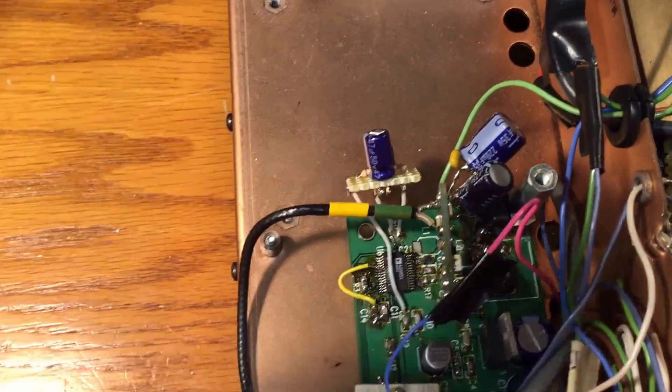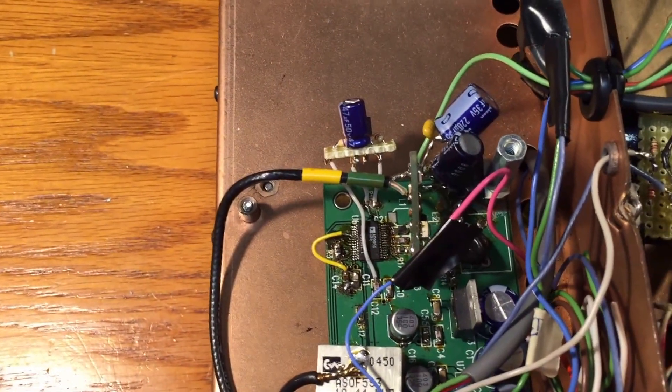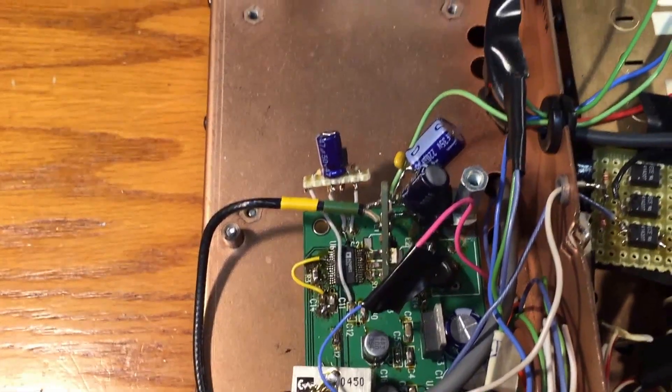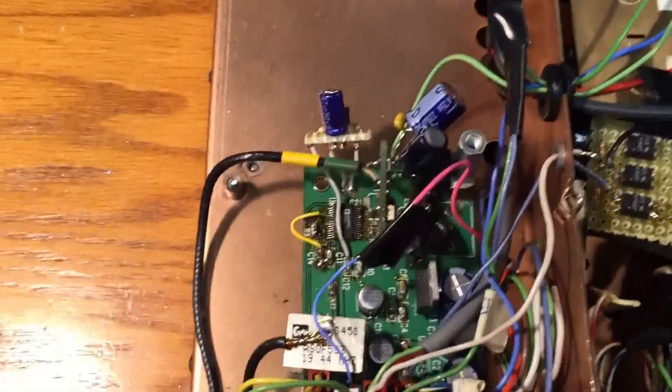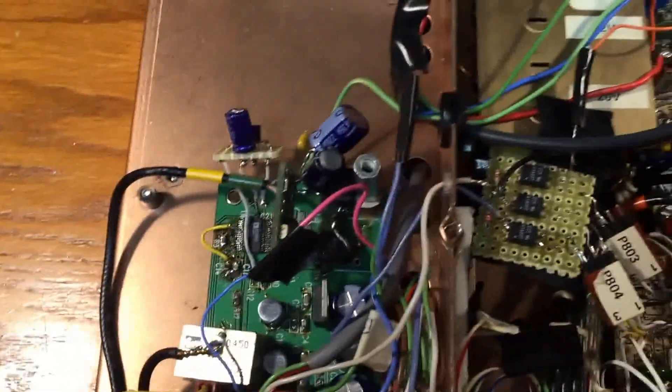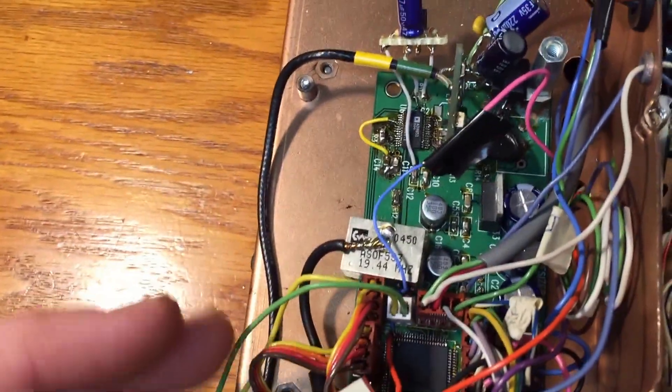This little kludge over here is because the local oscillator, when it gets to the 10-meter band, doesn't have quite enough output strength. So I had to kludge a little amplifier on there, and this is really a kludge because I'm just using all the existing wiring that was on the original radio.